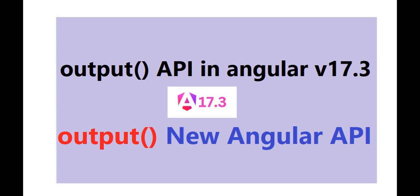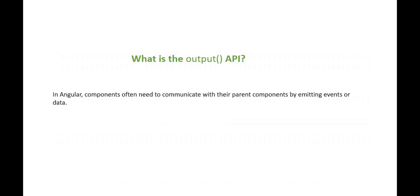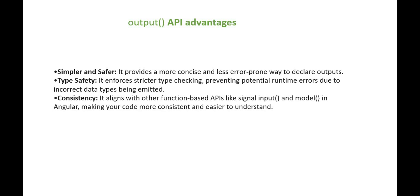If you are already working with Angular, to communicate between components we use input and output. Output is basically used when we want to transfer data from the child to the parent component. With Angular version 17.3, there is a slight change. The advantages include simpler and safer usage, less error-prone code, strong type safety, fewer runtime errors, and consistency with other functional APIs like signal, input, and model.